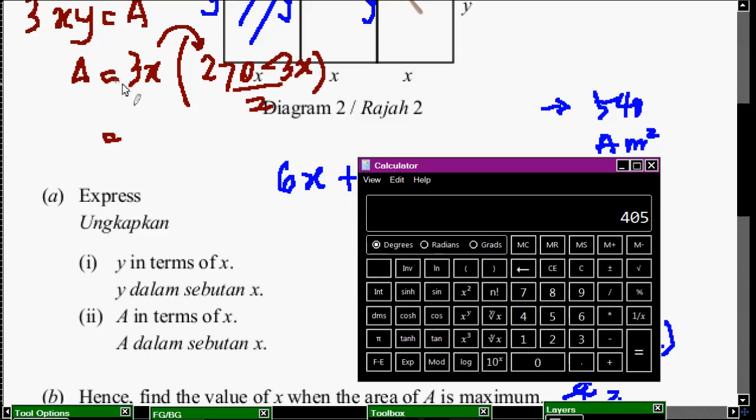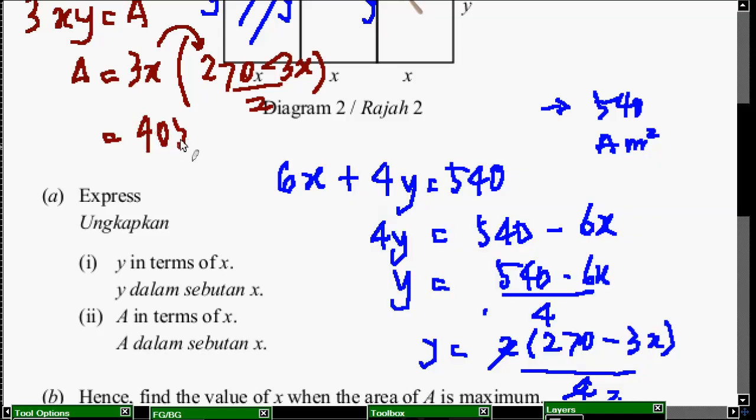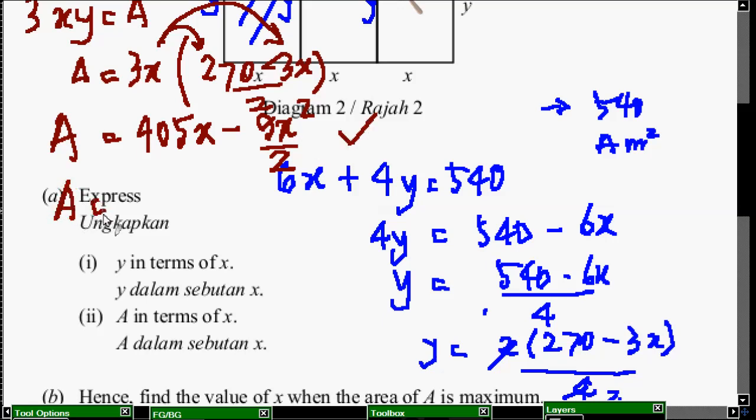So, dapat 405. Maksudnya, 3X/2 didarabkan dengan 270/2. So, kita akan dapat 405X. Yang ni, yang ni darab ni pula. Ini adalah 3X. Jadi, dapat 9X square per 2. So, kalau kita tak nak buat dalam single fraction, ini dah betul. Single fraction macam tu. So, ni dapatlah 810X dan ni dapat 9X square per 2. Ini single fraction. Ini kalau kita nak asingkan ni dalam bentuk kuadratik. So, ni untuk ni.